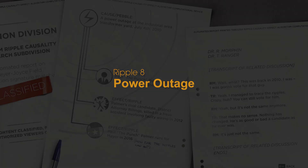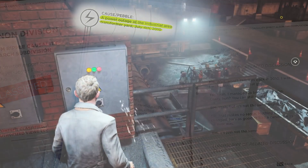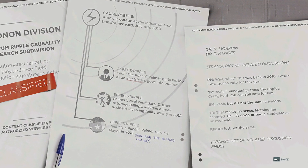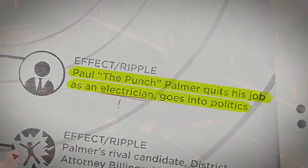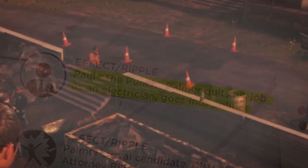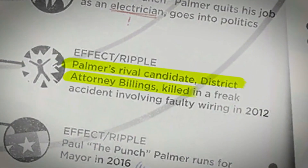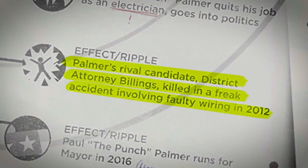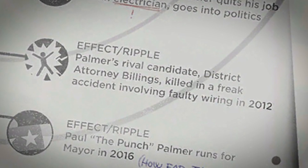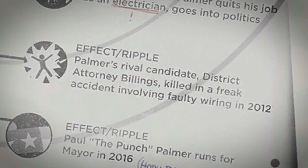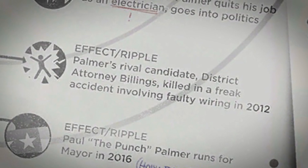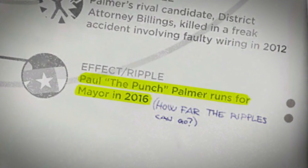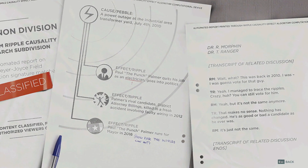Ripple 8: Power Outage. Nature of pebble: Jack flips a switch at a construction zone and causes a power outage. As a result, one of the electricians on site quits his job. Paul Palmer ends up going into politics instead. Two years later, District Attorney Billings — Palmer's political rival — dies in a freak accident as a result of faulty wiring. The most logical reason is that since Palmer no longer worked as an electrician, the specific job he would have been on was done by a different technician who made a mistake. Four years later in 2016, Palmer runs for mayor. The little things, like quitting your job, are a huge pebble in the course of our lives.